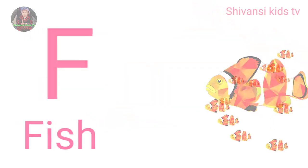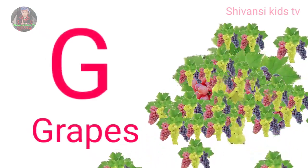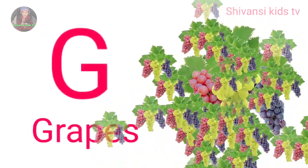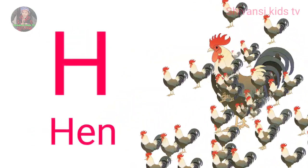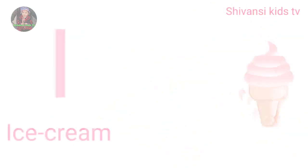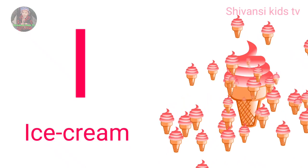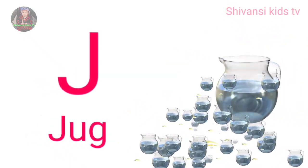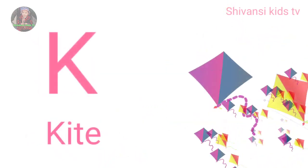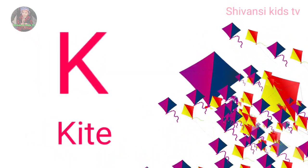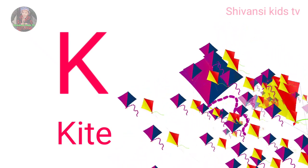F for fish, G for grapes, H for hand, I for ice cream, J for jug, K for kite.